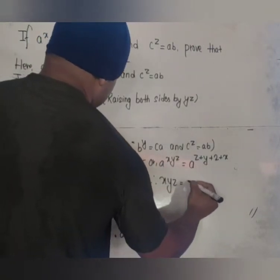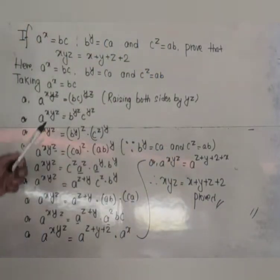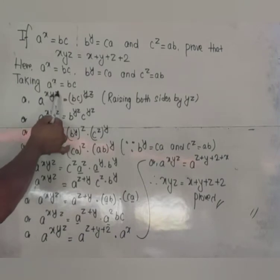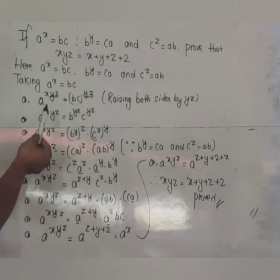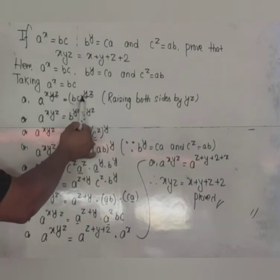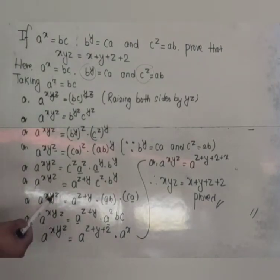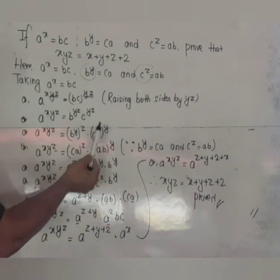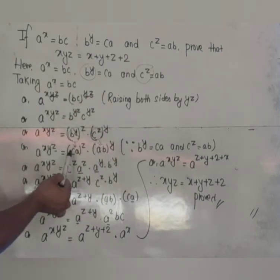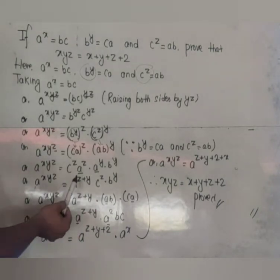To recap: since a^x = bc was provided, x was already present, so raising by yz gives xyz on the left. On the right, bc raised to yz splits into b^(yz) and c^(yz). Rearranging to isolate b^y and c^z: we write b^(yz) as (b^y)^z = (ca)^z and c^(yz) as (c^z)^y = (ab)^y. The value of b^y is ca and c^z is ab.